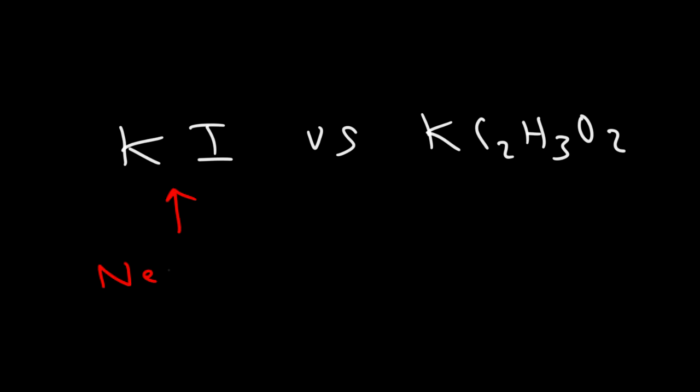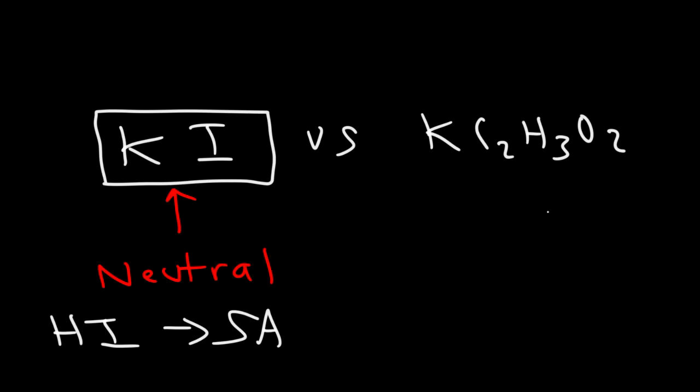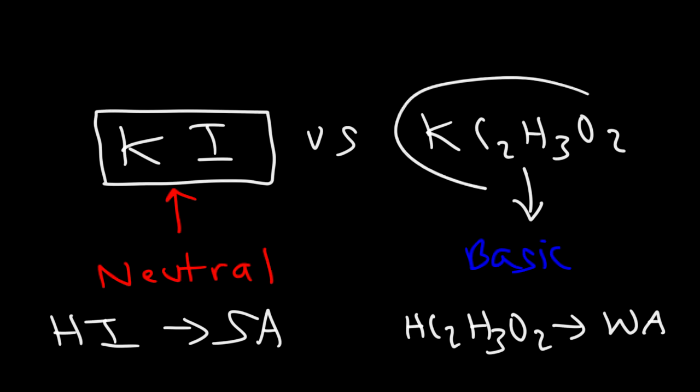So this one is going to be a neutral salt. And the reason for that is, HI is a strong acid. So the conjugate base is very weak, such that it's neutral. Now, this one here is going to be a basic salt. The reason being is, the conjugate acid, which is acetic acid, that's a weak acid. It's not a strong acid. So therefore, this is going to be more basic than this one. The weaker the acid, the stronger the base. And so that's how you can tell if the salt is going to be neutral or if it's going to be basic. It's by looking at the strength of the conjugate acid.